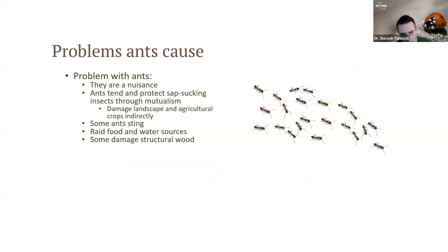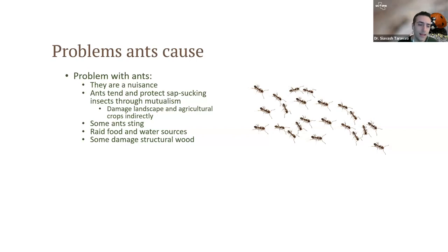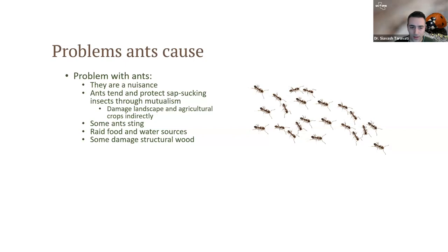Problems that ants cause can be anything from nuisance to causing landscape problems — tending aphids, psyllids like the Asian citrus psyllid. The more ants you have, the more protection those pests get against parasitoids, lady beetles, and other natural enemies. By disrupting that mutualism, we can better control landscape pests. Some ants sting, like fire ants. When ants get inside homes, they invade food sources, get into pantries and kitchens, and some can damage structural wood, like carpenter ants.